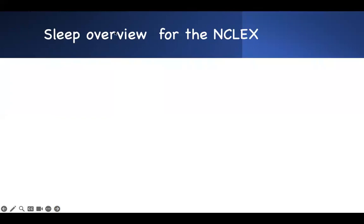Now let's go over sleep — it's straightforward. I'll focus on the stages and things you need to prevent. There are four stages of sleep and they're very important. The first stage is non-rapid eye movement — that is non-REM sleep, Stage 1. It usually lasts 5 to 10 minutes maximum.